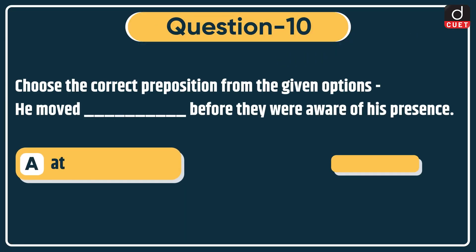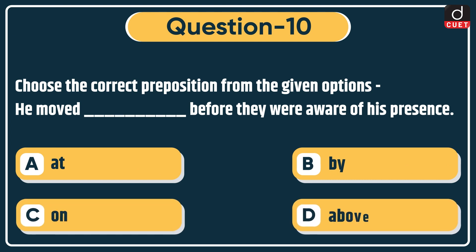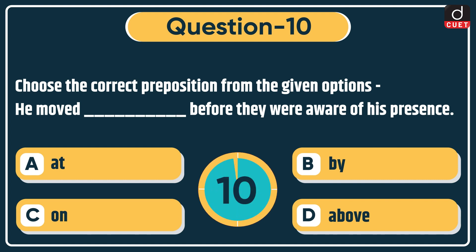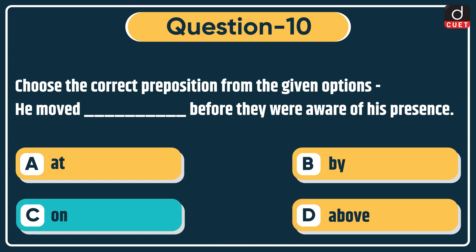Last question: choose the correct preposition from the given options. 'He moved ___ before they were aware of his presence.' Options: at, by, on, or above. The correct answer is option C, on.